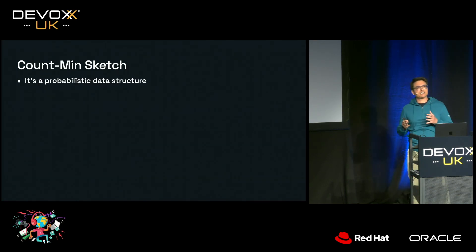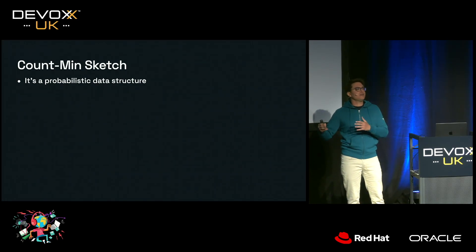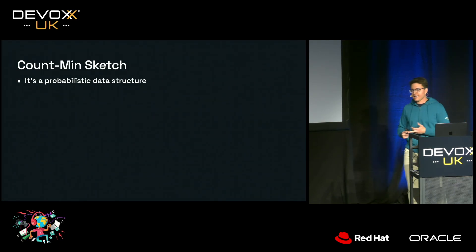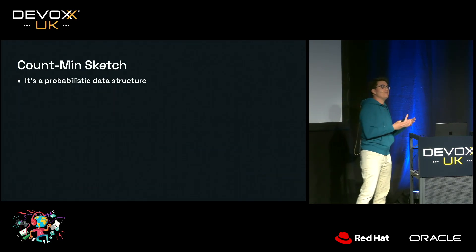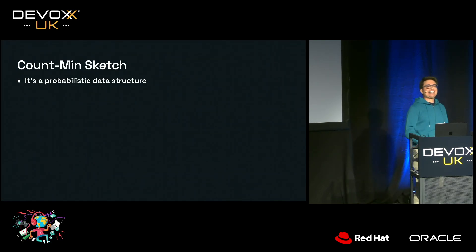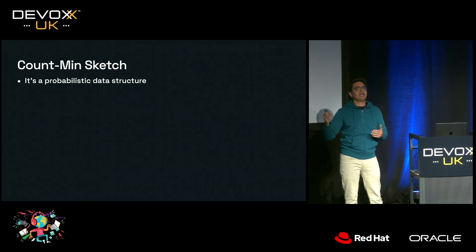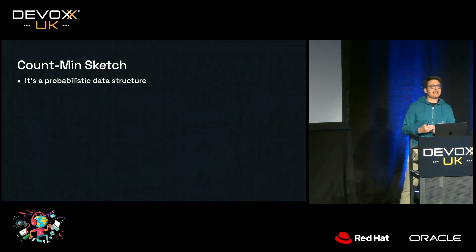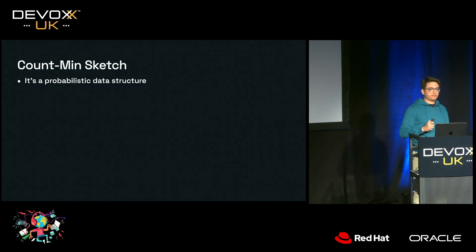Count-Min Sketch is a probabilistic data structure. If you take a step back, deterministic data structures are those we use basically every day: lists, sets, sorted sets, stacks, and so on. They're called deterministic because whatever you add to them, you can retrieve back later. If you add an element to a list and iterate through it, you'll find that element. If you add a member to a set and check if it exists, it's going to return true.